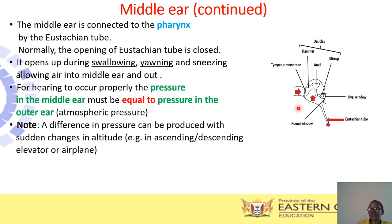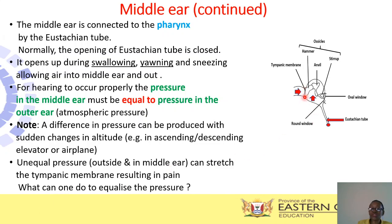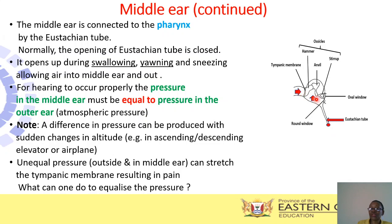If there is unequal pressure between the middle ear and the outer ear, it affects the tympanic membrane. For instance, if you are flying in an airplane and you feel something is wrong in your ears — hearing things as if they are far away, experiencing some mild pain — then you must swallow something or yawn. Then the air will rush in and the pressure in the middle ear will be equalized with the pressure in the outer ear.